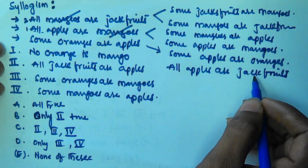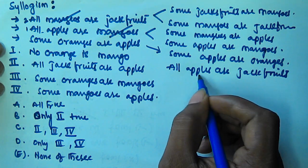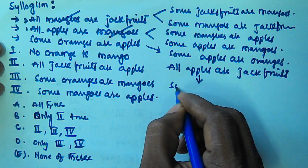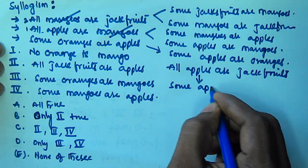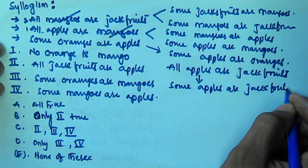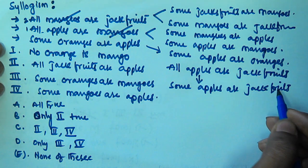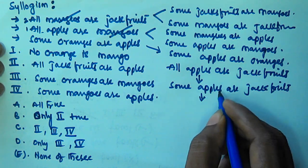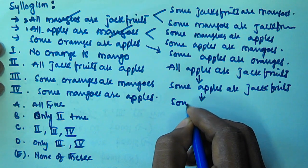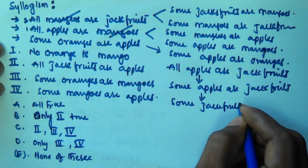We got all apples are jackfruits. From this we can derive two more: since all apples are jackfruits, some apples are also jackfruits. And by interchanging that 'some' statement, some jackfruits are apples. So now we have derived all possible conclusions.